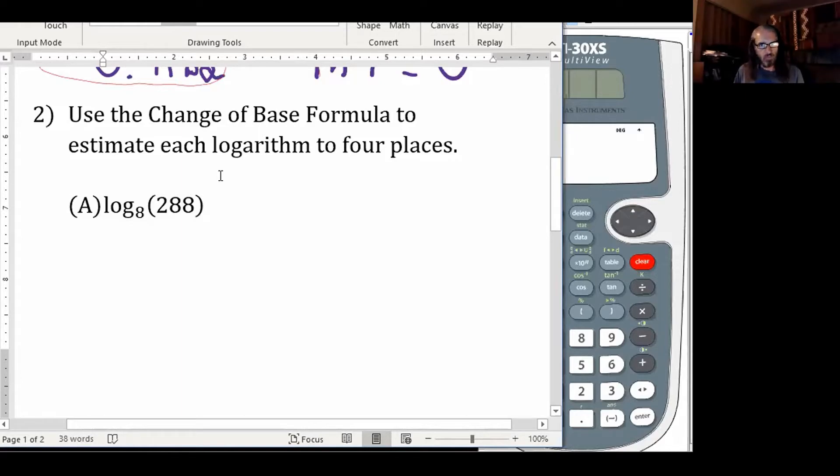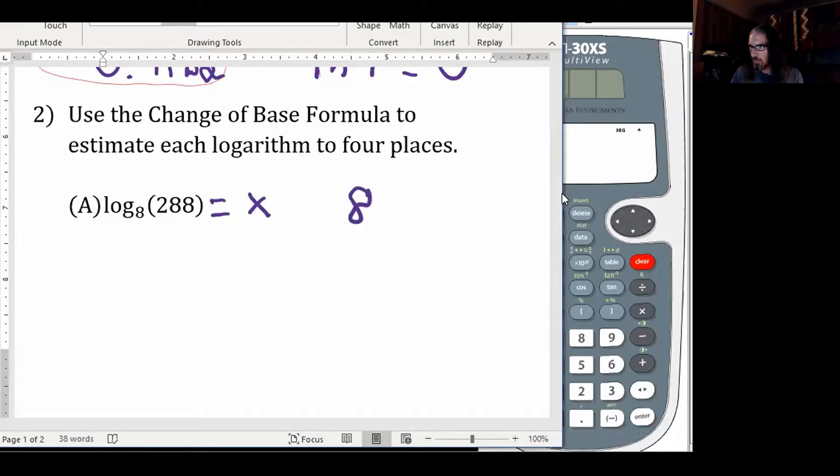If someone asks, I could give a general proof of the change of base formula, but I'm going to verify that it works for this question. We could say that whatever that is going to equal, call it x, then because the answer to a logarithm is an exponent for the same base, in this case 8, then 8 to the x equals 288.